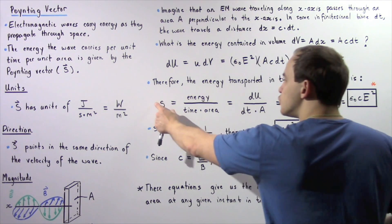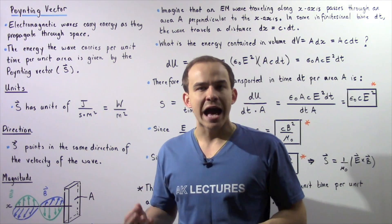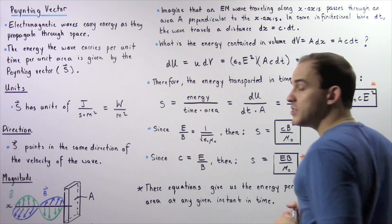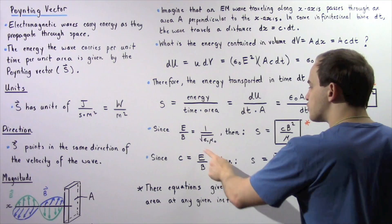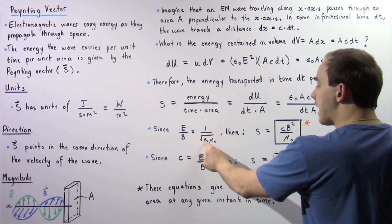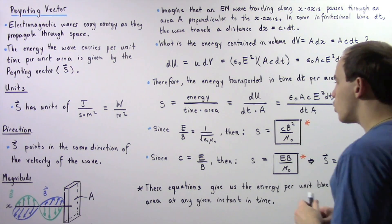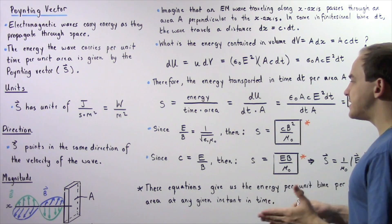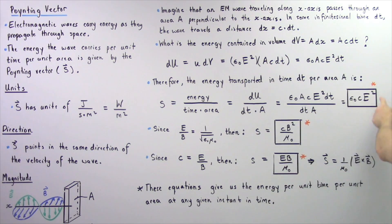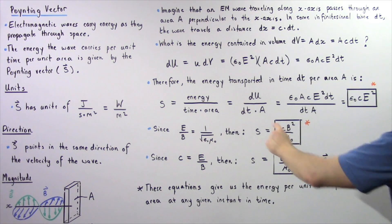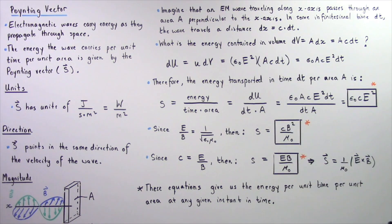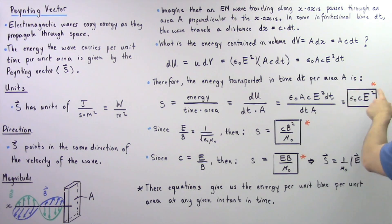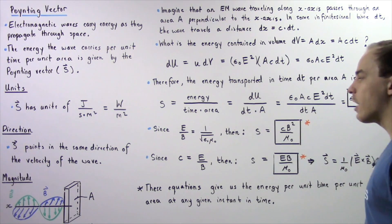We can also express the magnitude of the Poynting vector in terms of the magnetic field B. Recall that the ratio of the electric field to the magnetic field at any given moment equals 1 divided by the square root of the product of epsilon naught and mu naught. Rearranging and substituting E in terms of B into the previous equation gives: S equals c times B squared divided by mu naught. Both equations give the same quantity — one in terms of E, the other in terms of B.